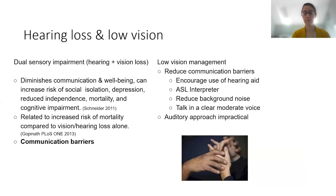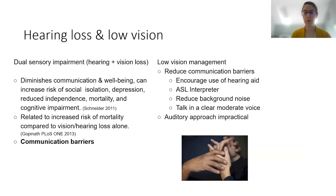Sometimes a patient's vision is reduced enough that they could benefit from a non-visual reading strategy, so we turn to devices with both magnification and read-aloud capabilities. However, for a patient with both hearing and vision loss, this may not be appropriate since it depends on hearing to help. These patients might have more need to learn tactile strategies like braille in order to compensate for their vision loss if it is severe enough.